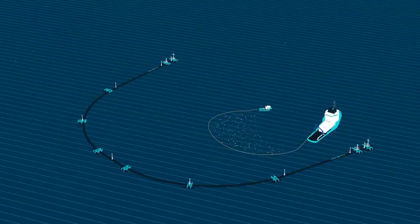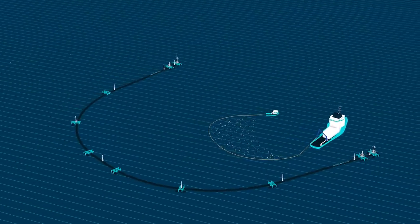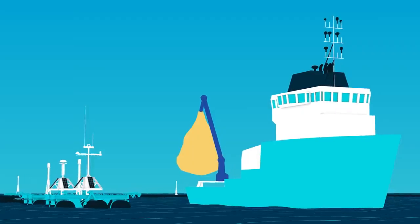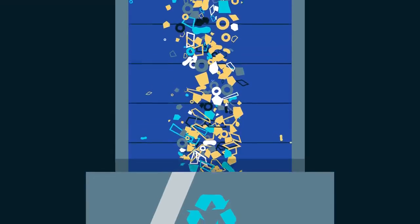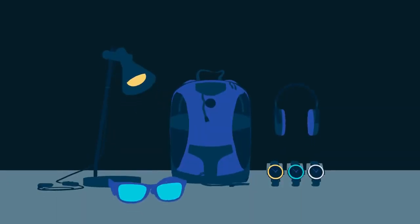Periodically, a support vessel comes by to take out the concentrated plastic, like a garbage truck of the ocean. The plastic is then transported to land, recycled, and made into durable products.